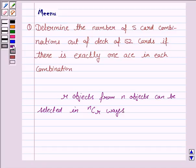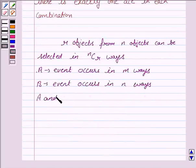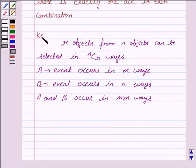We should also know the fundamental principle of counting which says that if event A occurs in M different ways and event B occurs in N different ways, then event A and B occur in M into N ways. This knowledge will work as key idea.